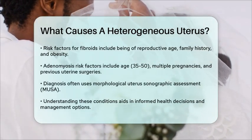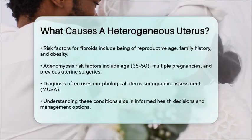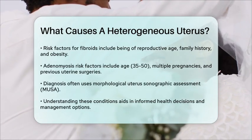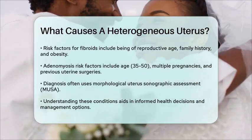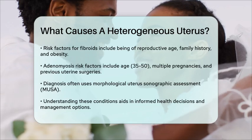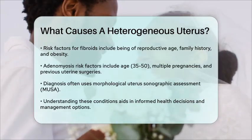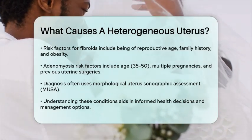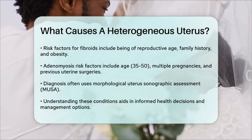Diagnosing these conditions involves a systematic approach, often using Morphological Uterus Sonographic Assessment, or MUSA. This method helps in the correct localization of lesions and guides the surgical approach if needed. The description includes the shape, rim margins, and echogenicity of the lesions, as well as any acoustic shadowing.